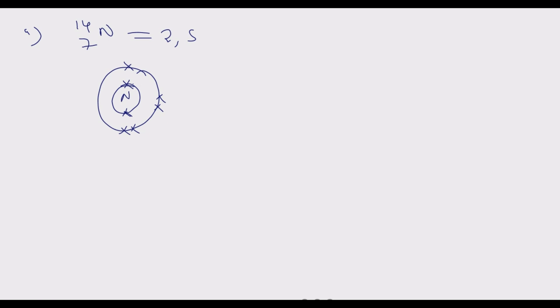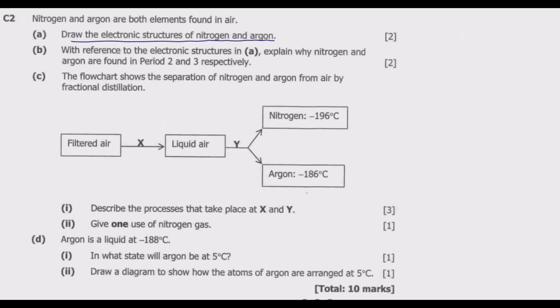Then we go to argon. Argon on the periodic table is 40 mass number and the proton number is 18. So in the first shell we have 2, then the second shell 8. 2 plus 8 is 10, 18 minus 10 is 8. So we have the first shell, second shell, then third shell. Let me use a different color to see it clearly. Then we have another complete shell, and this is argon. Once you do that, we are good to go. This is what question A requires us to do.